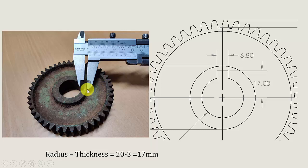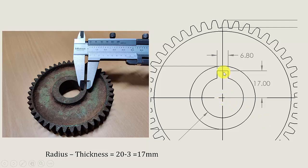Next is the keyway thickness. I have measured the top dimension and subtracted it from the radius. The overall diameter is 40 mm, so the radius is 20 mm. The measurement at the top is 3 mm, so it is 20 minus 3, which equals 17 mm — that is the dimension from the center of the gear to the top face of the key slot.